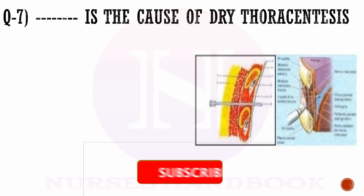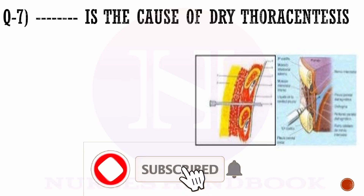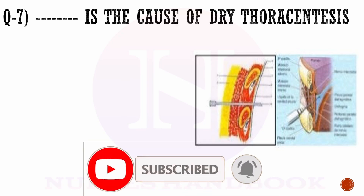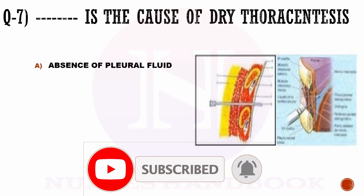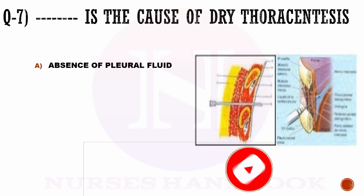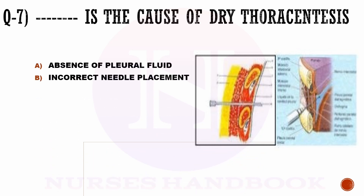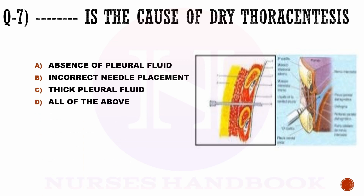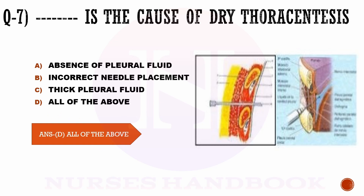Question number 7. Dash is the cause of dry thoracentesis. Options are a) absence of pleural fluid, b) incorrect needle placement, c) thick pleural fluid, and d) all of the above. The correct answer is d, all of the above.